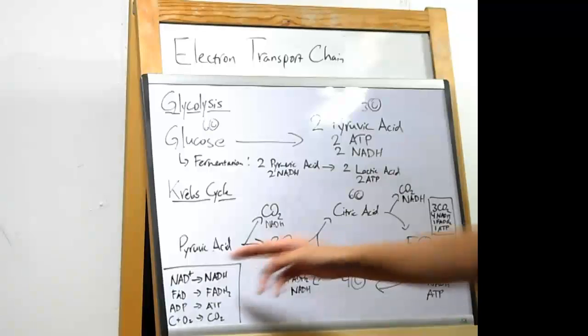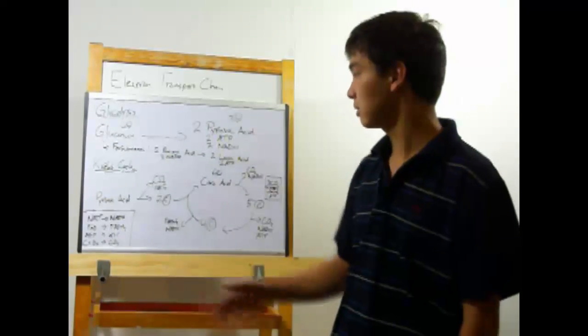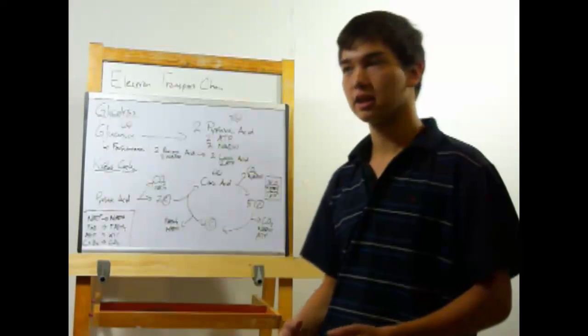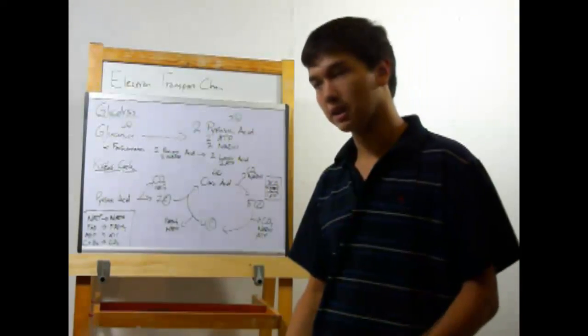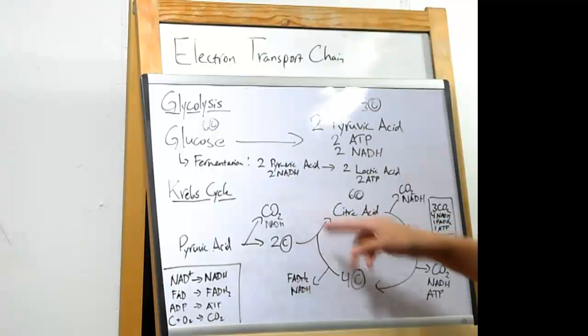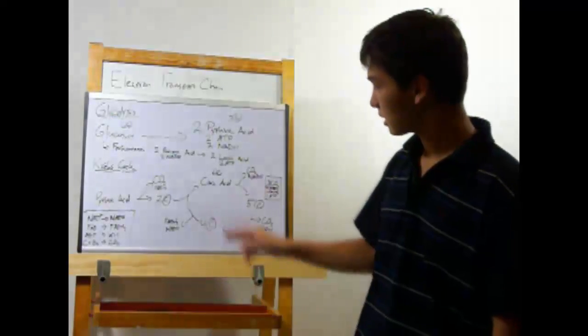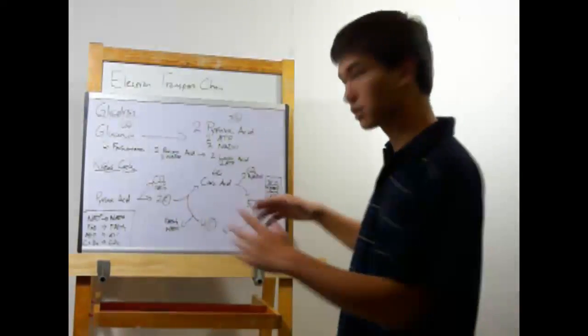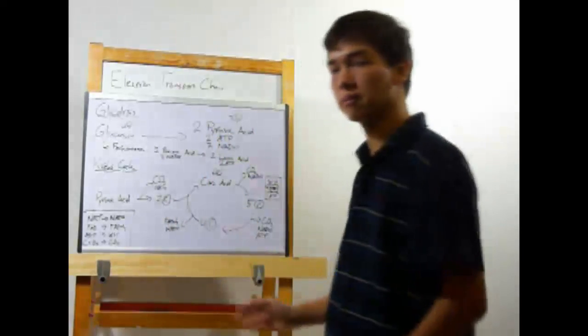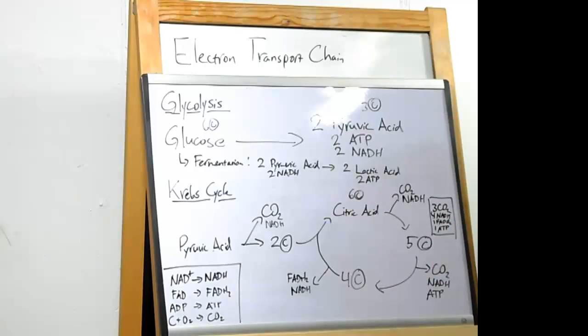You start out with pyruvic acid, a three carbon molecule, and you remove one of those carbons and bond it to oxygen, creating CO2. That's where the oxygen comes in. This also produces an NADH. This two carbon molecule now enters the Krebs cycle and fuses with the four carbon molecule that's still spinning around. This produces a six carbon molecule, citric acid.